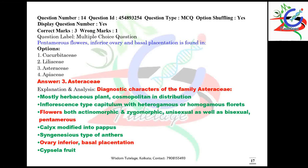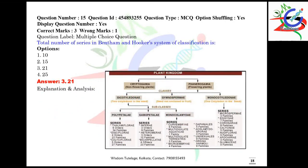Question number fourteen concerns the characters of family Asteraceae — those characters and other diagnostic features are also mentioned here, so go through them. Question number fifteen: the total number of series in Bentham and Hooker's system of classification is 21. The entire classification along with different types of series is given — you have to remember these.